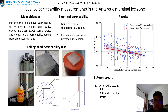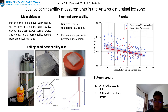The result is shown in this figure where the horizontal axis is the ice depth and the vertical axis is the permeability result. A large scatter in the permeability measurement is apparent, and the shaded areas represent the 90% confidence interval.